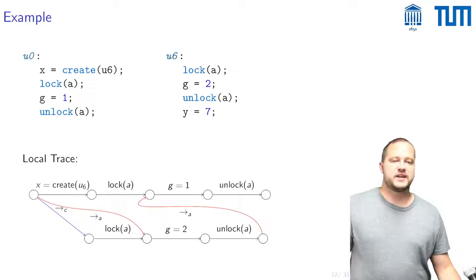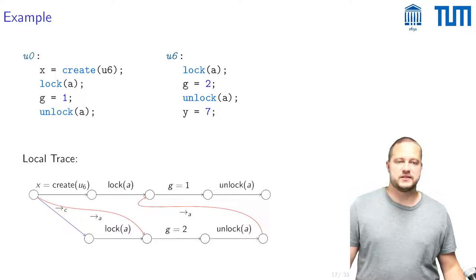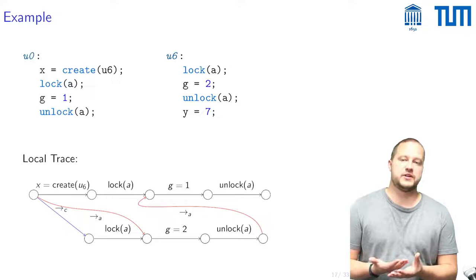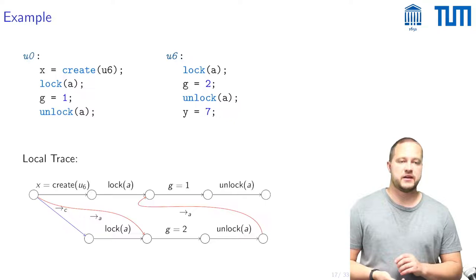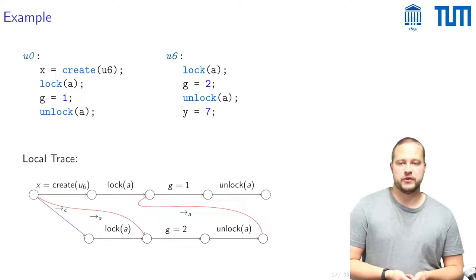So let's take a look at an example and this is a local trace of the first thread that ends in this unlock A and this thread is aware of its own history and is also aware of parts of the history of the other thread namely that part which it has learned about by communicating via locking and unlocking of this mutex A. However it for example does not know whether this other thread has executed this step where it sets this local variable y to 7 or not.